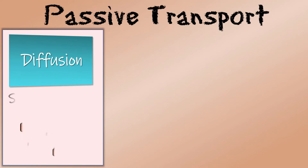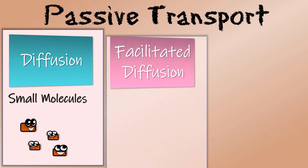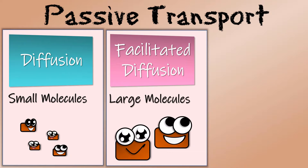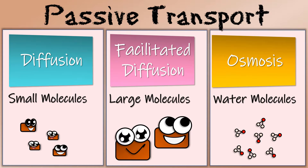Diffusion involves the transport of small molecules. Facilitated diffusion involves the transport of large molecules with the help of either carrier proteins or transmembrane channels. And osmosis involves the transport of water molecules from a hypotonic solution to a hypertonic solution.